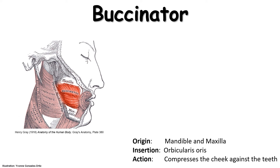This is a memory tool to assist with learning the buccinator. The buccinator is a four-sided muscle that sits in the area of the cheek. It's positioned between two bones, the maxilla and the mandible, shown here, that form the upper and the lower jaw respectively.